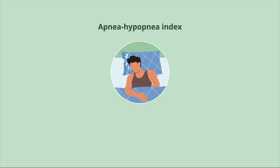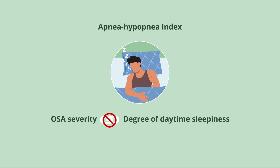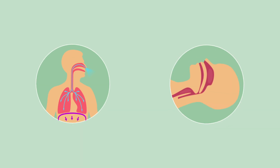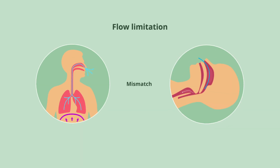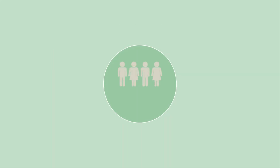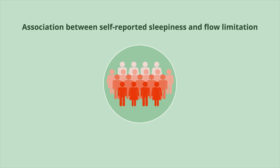Interestingly, the severity of OSA is not necessarily correlated with the degree of daytime sleepiness, which highlights the need to better understand and quantify the factors contributing to EDS in patients with OSA. The researchers hypothesized that flow limitation, which is an objectively determined mismatch between ventilatory drive and achieved airflow, is an important contributor to sleepiness in patients with low AHI, less than 15 per hour. The study aimed to investigate the association between self-reported sleepiness and flow limitation in individuals with an AHI less than 15 events per hour.